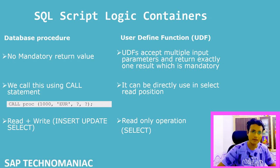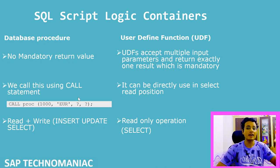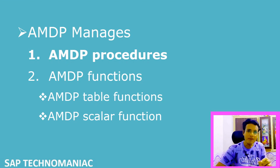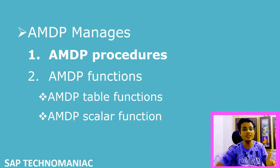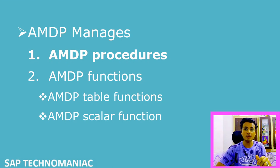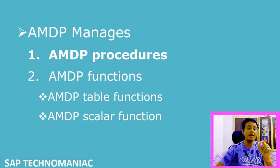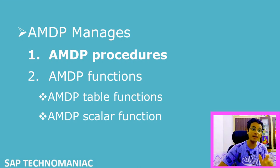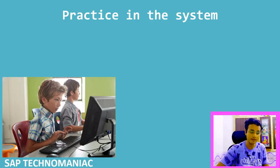The AMDP framework manages two things: AMDP processors and AMDP functions. AMDP functions are further divided into AMDP table functions and AMDP scalar functions. In this video we will focus on AMDP processors; AMDP table functions were covered in previous videos, and AMDP scalar functions will be covered in upcoming videos.